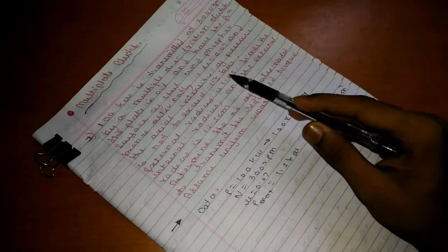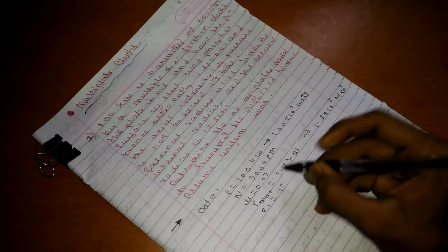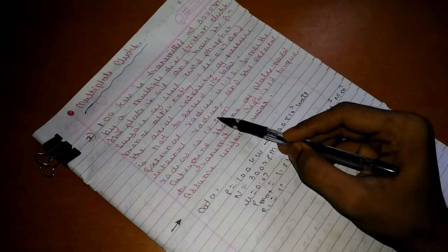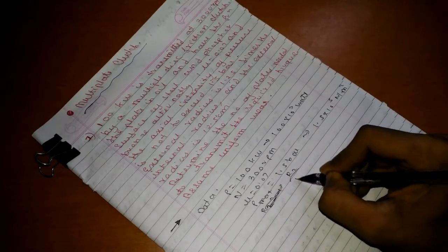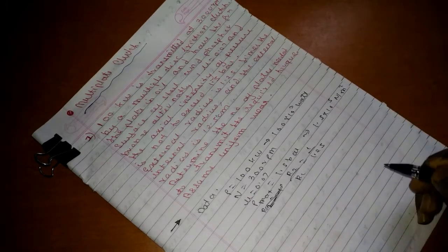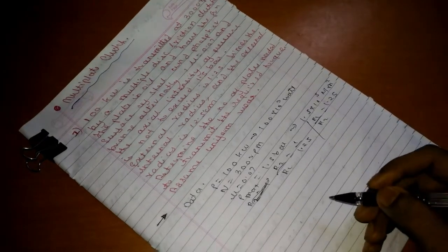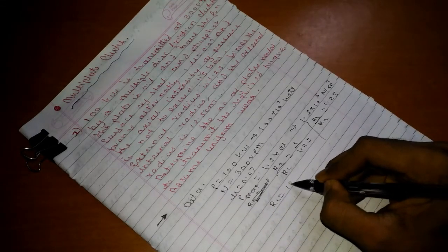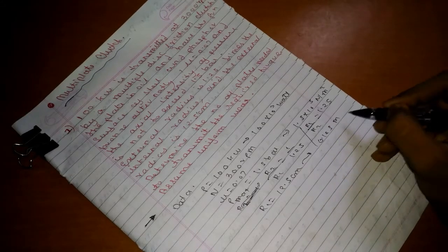The next one is external radius is 1.25 times the internal radius, that is R1 equals 1.25 times R2. The external radius, R1 equals 12.5 cm, which is equivalent to 0.125 m, that is 12.5 into 10 raised to minus 2.